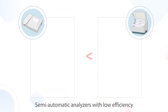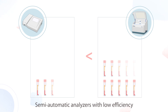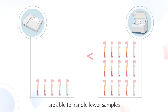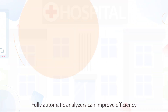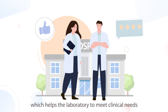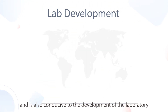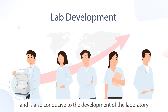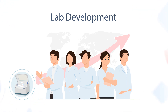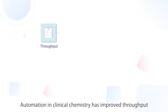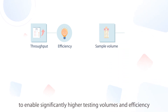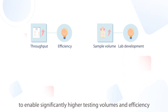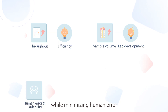Semi-automatic analyzers with low efficiency are able to handle fewer samples. Fully automatic analyzers can improve efficiency, which helps the laboratory to meet clinical needs and is also conducive to the development of the laboratory. Automation in clinical chemistry has improved throughput to enable significantly higher testing volumes and efficiency while minimizing human error.